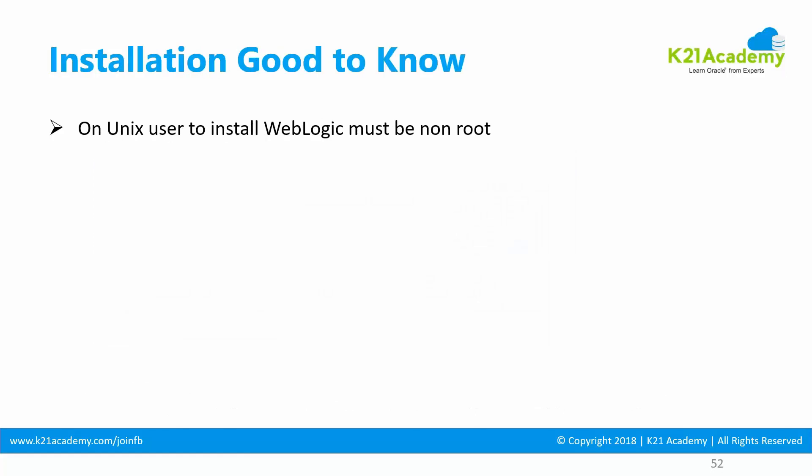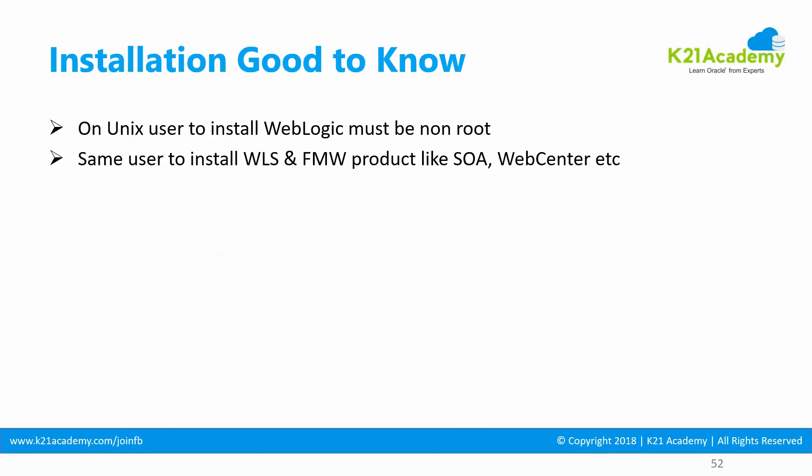Some good things to know: if you're installing on UNIX, avoid using the root user — use a non-root user, such as an 'oracle' user or similar. If you're installing WebLogic for a Fusion Middleware product, you need Coherence because many Fusion Middleware products use Coherence for cluster communication.